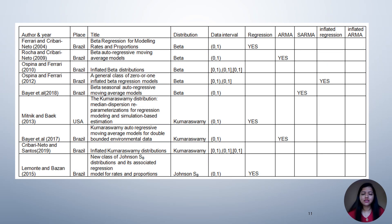To understand models already introduced in this area, I conducted a literature search. Ferrari and Cribari-Neto in 2004 introduced beta regression modeling for rates or proportions. In 2012, Ospina and Ferrari introduced a generalized class of zero or one inflated beta distribution. In 2013, Mitnik and Beke introduced Kumaraswamy distribution median reparameterization for regression modeling and simulation-based estimation. In 2017, Bayer et al. introduced the Kumaraswamy autoregressive moving average model.